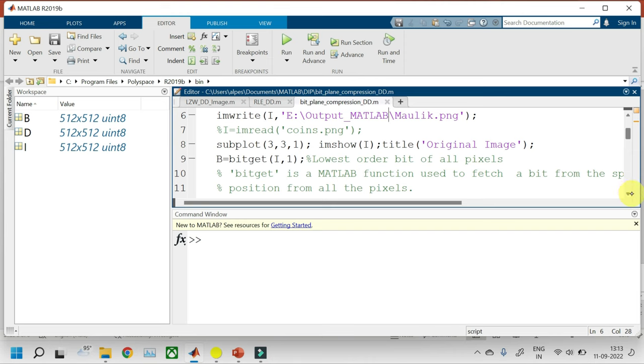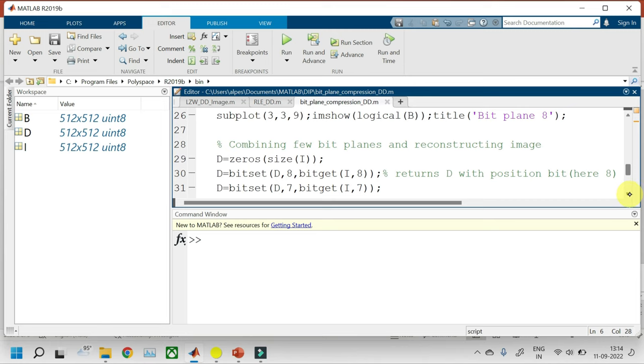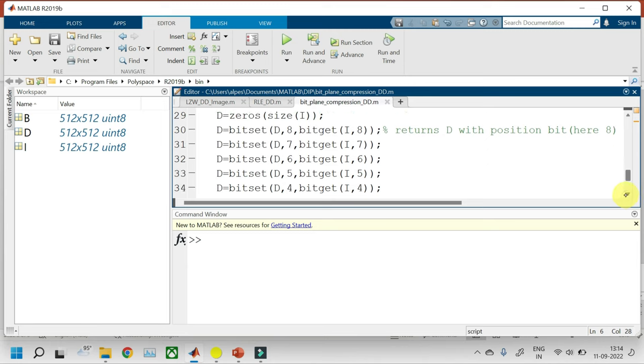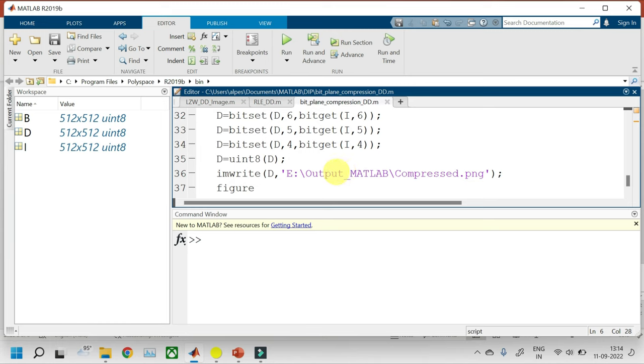Now as we know, we will be extracting different bit planes and sub plotting it. And now what I will do, I will combine only few bit planes using bit set, say bit plane number 8, 7, 6, 5 and 4 and I will be omitting bit plane 3, 2 and 1 and reproducing my output image. Which will also be written in this folder.